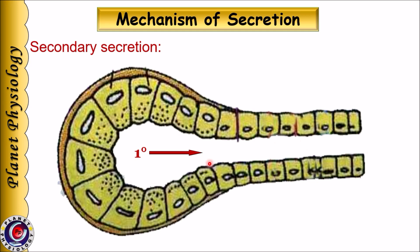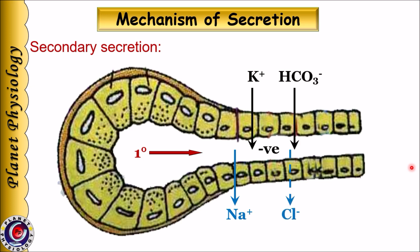As primary secretion flows through the ducts, ductal cells actively reabsorb sodium and secrete potassium ions. However, there is excess sodium removal over potassium secretion. This creates a negativity of about 70 millivolts, which in turn causes passive diffusion of chloride ions. To maintain electroneutrality, bicarbonate ions enter the lumen.